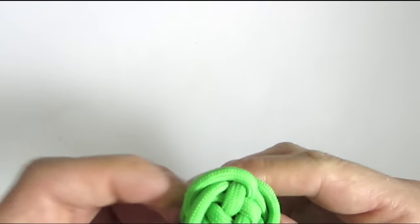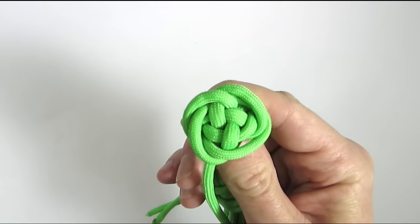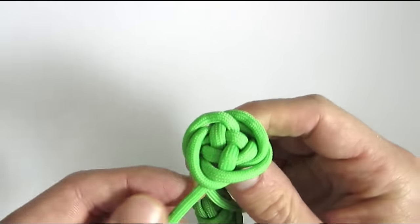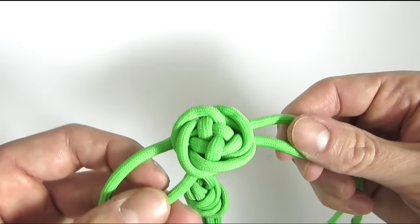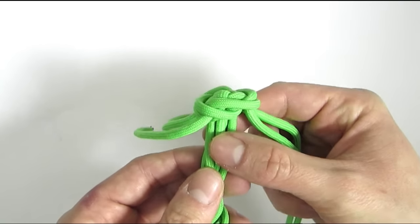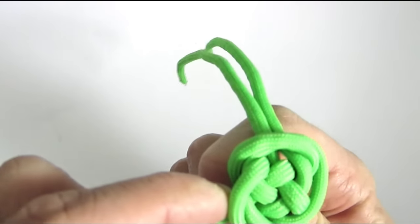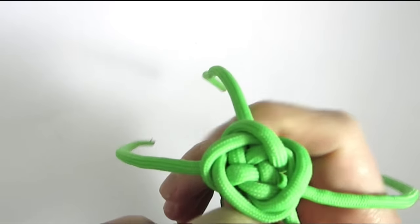Now we need to tighten up our knot and just like with all Matthew Walkers this needs to be done slowly. To tighten the center knot which is the crown knot we're going to use these short strands, and the starting strands are going to be used to tighten the Matthew Walker.